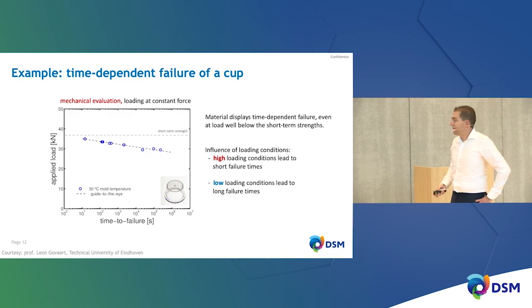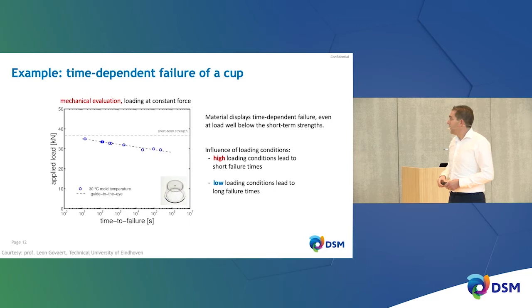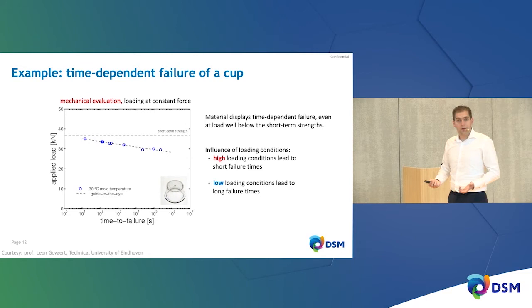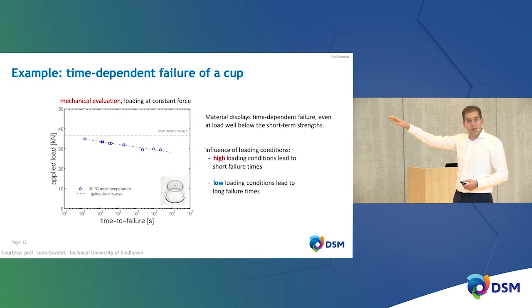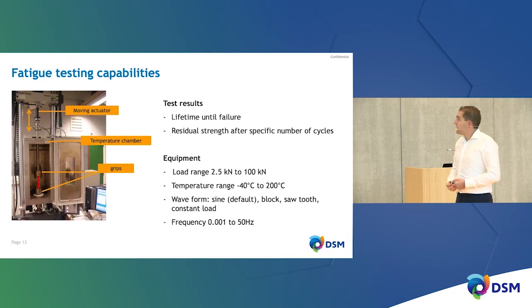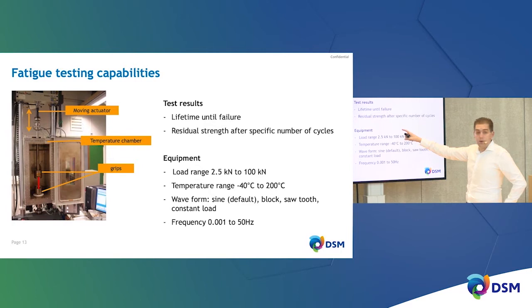Plotting many load levels shows that at high loads you have short failure times, and at low loads you have longer failure times — a trivial trend on a log scale. If you want to understand how a real part performs, you want to find out what is the slope of this stress-dependency line. This brings me to typical fatigue testing capabilities — on the left you can see a fatigue machine with a moving actuator on top, a temperature chamber for environmental control, and two grips clamping the specimen.